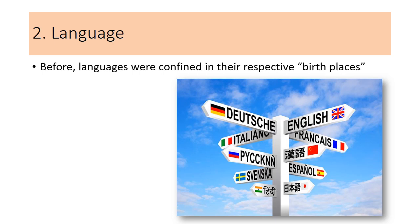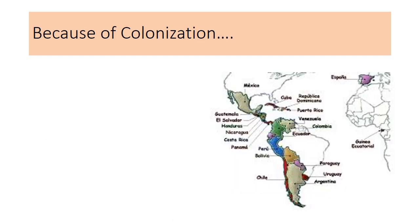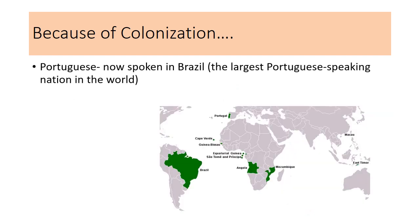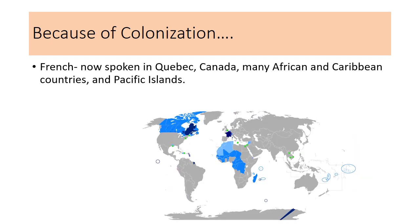Aside from the plants, there were languages that were confined in their respected birthplaces. For example, Spanish was only spoken in Spain at that time, Portuguese in Portugal, English in England, and French in France. But because of colonization, Spanish is now spoken in most Central American countries and in most Southern countries. Portuguese is now spoken in Brazil, and this is the largest Portuguese-speaking country in the world. And French is now spoken in Quebec, in Canada, and many African and Caribbean countries, and the Pacific Islands.